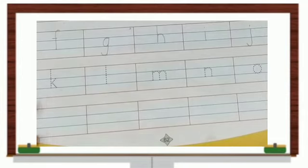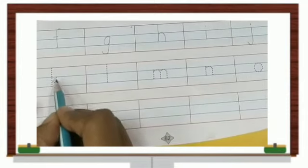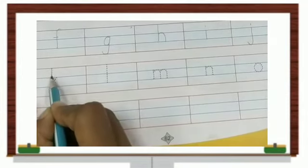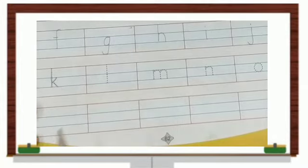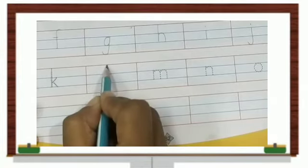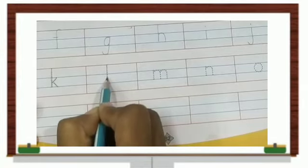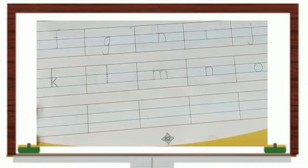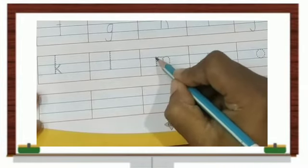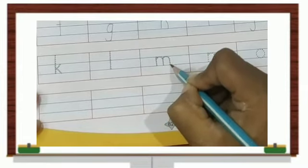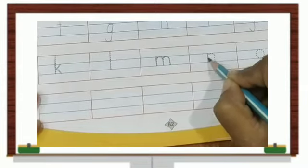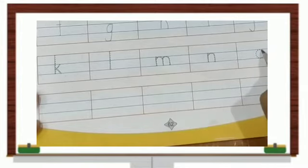After J comes which letter? After J comes letter K. Let's write K, small letter K. Slanting lines between these two blue lines. K. L. After L comes M. N. O. Right?